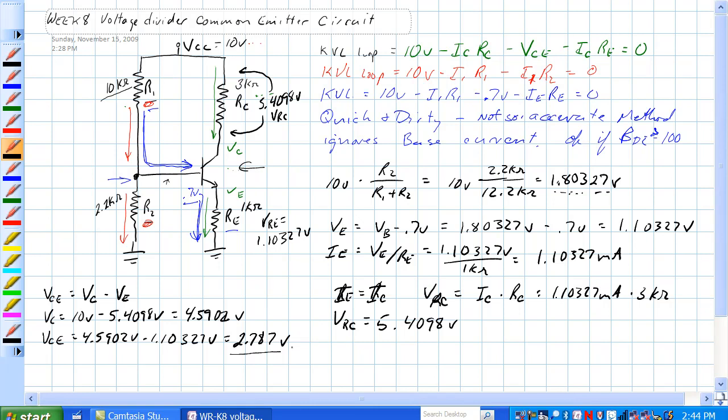So VCE here is 2.787 volts, and that's the quick and dirty method of biasing this thing. There is a better way that includes beta, which we know is changeable on a lot of transistors. The beta for the 3904 is a low of 30 and a high of 300, so we need to figure up a way to calculate this circuit using beta. That's next.